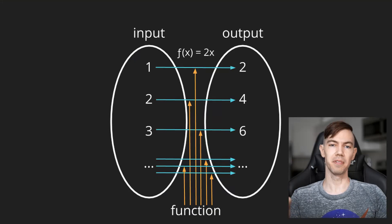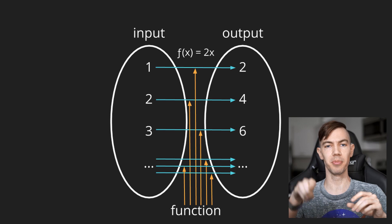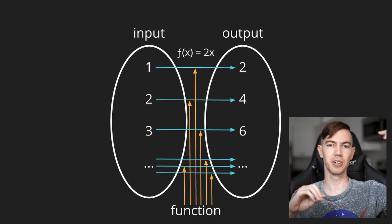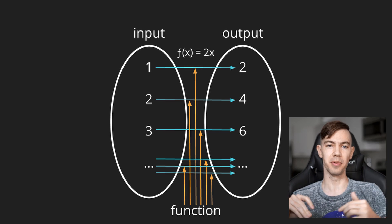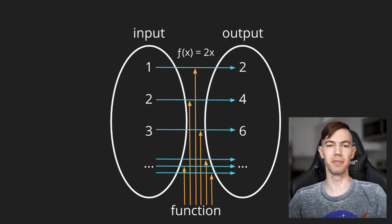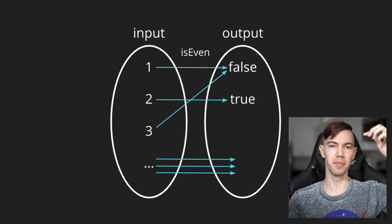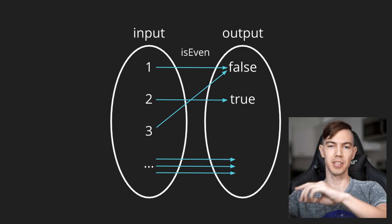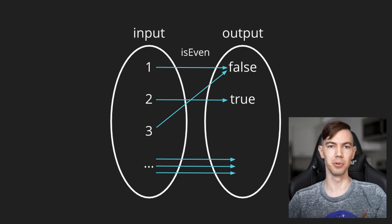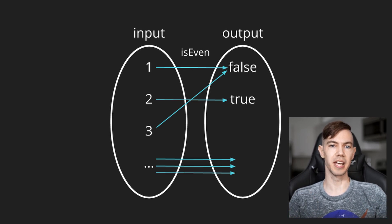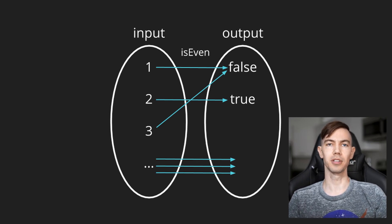First of all, to recap, let's take a look at one of the diagrams from the first function video. We have a representation that shows sets for the input values and the output values, and then arrows that show how the inputs map to the outputs. Those arrows actually define what makes up the function itself, and those arrows can point from multiple inputs to the same output. The technical term for functions that follow the rules of functions is a total function, frequently just shortened to function.